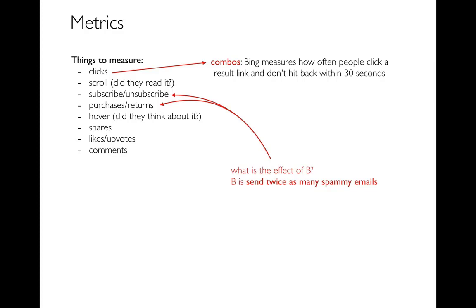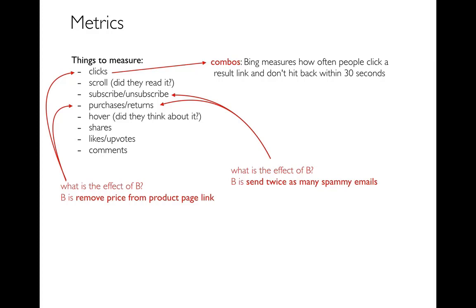You can imagine inventing metrics that combine these — somehow put a dollar value on what a subscription is worth and weight how many unsubscribes versus how many purchases you get. Here's another example: say I have a link to a product page that says 'buy now for $300.' I change that link so it doesn't say the actual price — just 'on sale, buy now.' Removing the price might make more people click on it, since the price scares some people away.